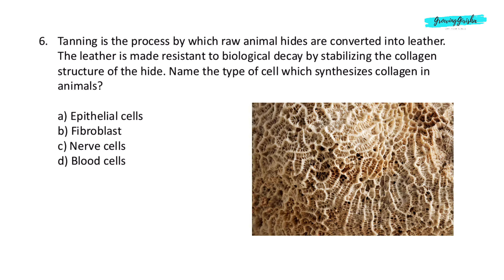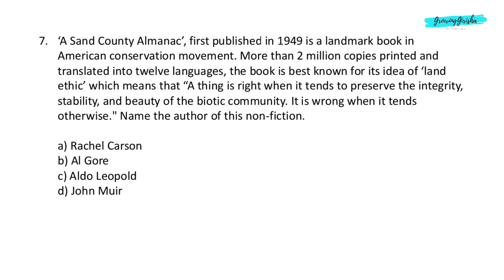Question 6. Tanning is the process by which raw animal hides are converted into leather. The leather is made resistant to biological decay by stabilizing the collagen structure of the hide. Name the type of cell which synthesizes collagen in animals. Option B: Fibroblast.